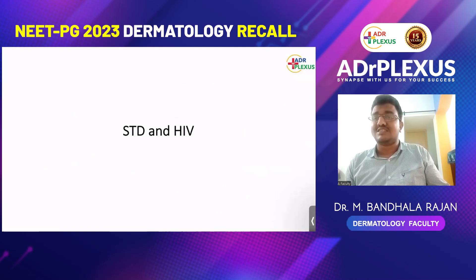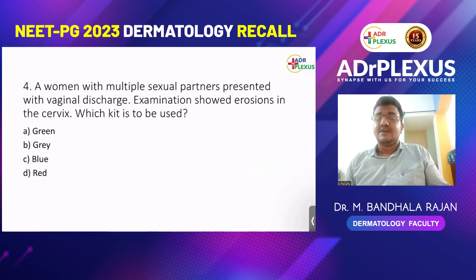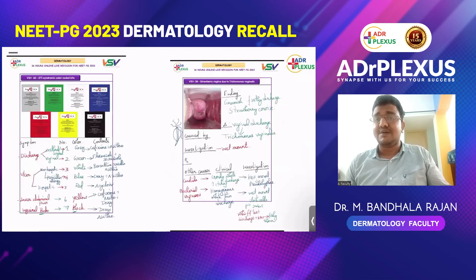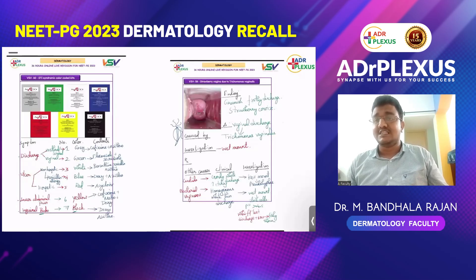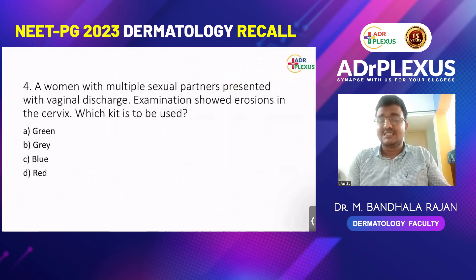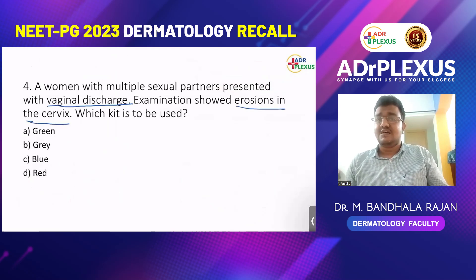Next, questions on sexually transmitted diseases and HIV. A woman with multiple sexual partners presented with vaginal discharge. Examination showed erosions in the cervix. Which kit is to be used? Options: green, grey, blue, red. Blue and red kits are mainly for genital ulcers — so those two options are out. We are left with green and grey. Green is for vaginal discharge; grey is for cervical or urethral discharge. There are two clues here: vaginal discharge and erosions in the cervix.